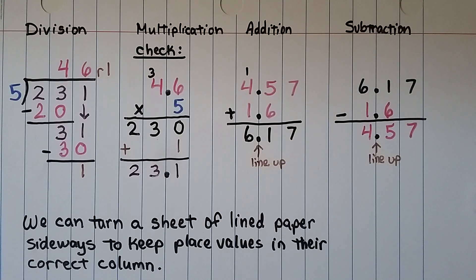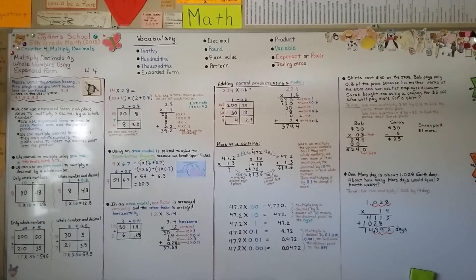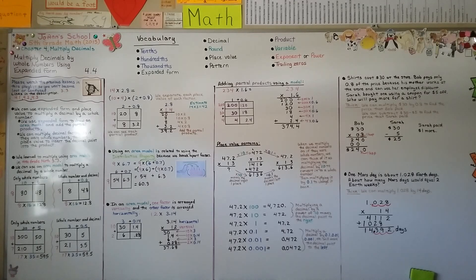Remember, you can turn a sheet of lined paper sideways to keep place values in their correct column as you multiply. Make sure as you break apart your numbers, you break them apart correctly by place value. In our next lesson, 17.5, we're going to be solving some word problems about multiplication and money using a strategy of draw a diagram. I hope I'll see you there. Hit the like button for me, and remember there are links in the description to help you. Bye!